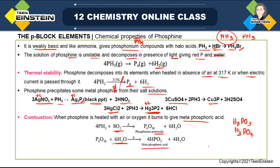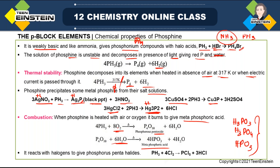Reaction of PH3 with halogen: it forms pentahalides. This is an important method for production of PCl5. Two important chlorides of phosphorus are PCl5 (phosphorus pentachloride) and PCl3 (phosphorus trichloride); these halides will be discussed separately.